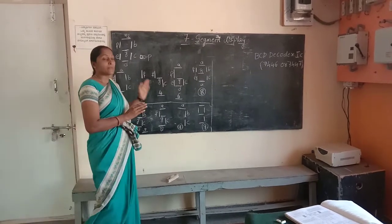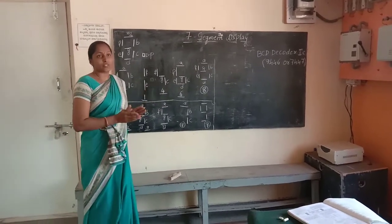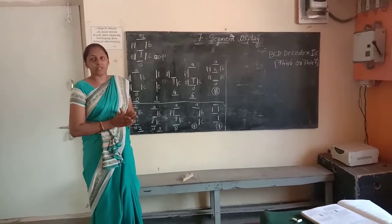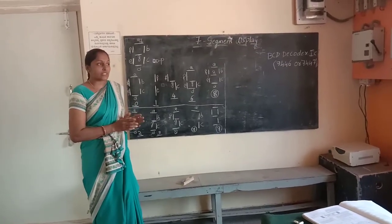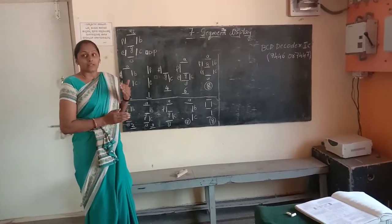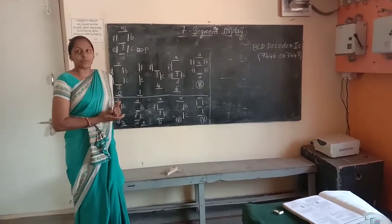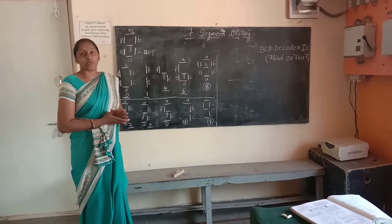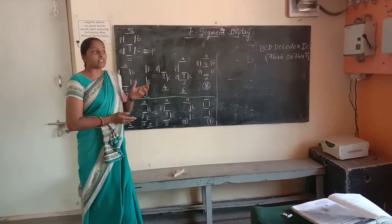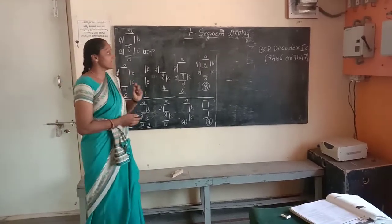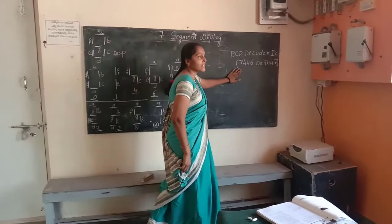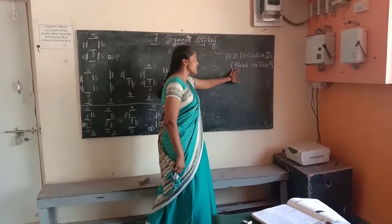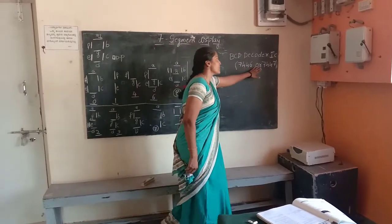First, BCD is a 4-bit BCD to convert. Decimal is available on the 4-bit BCD converter. The decoder IC is 746 and 747.